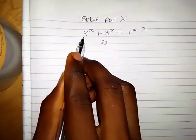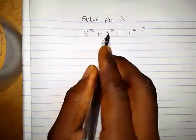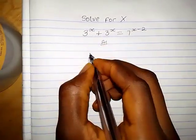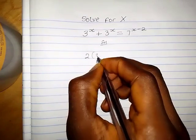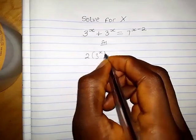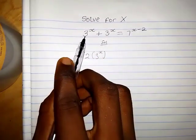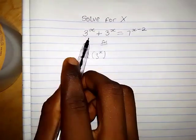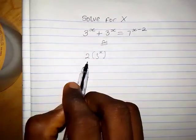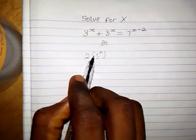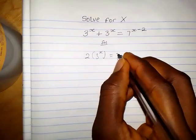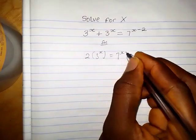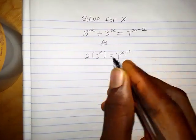Solution. We simply add these two terms. We have 2 into 3 raised to the power x, because this one is just individual. So when we add them together, we have 2 into 3 raised to the power x equals 7 raised to the power x minus 2.